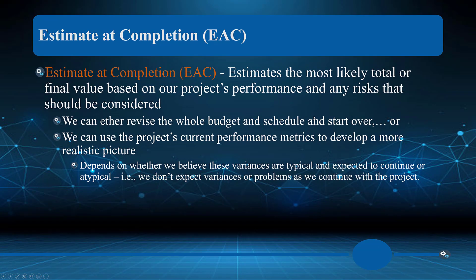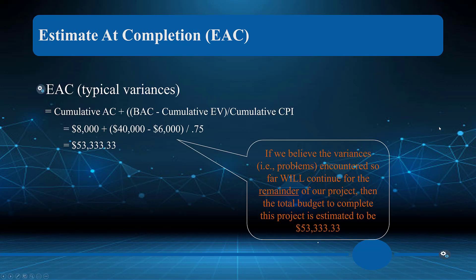Estimate at completion (EAC) is the most likely total or final cost based on the project's performance and any risks to consider. We can either revise the whole budget and schedule and start over, or use the project's current performance metrics to develop a more realistic picture. If our CPI is 0.67, we can apply that throughout the project to figure out the true likely final cost.